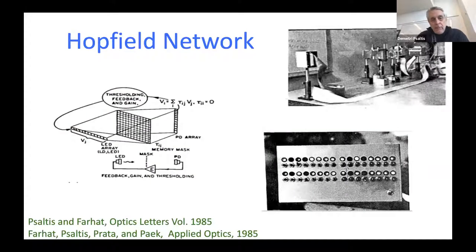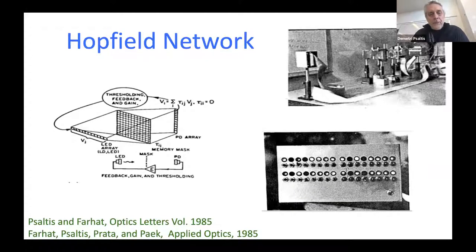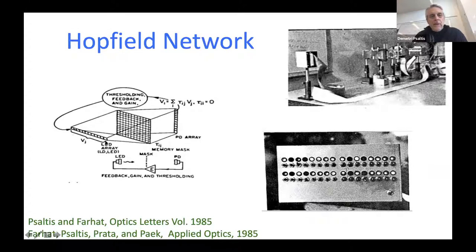In 1985, back at Caltech, they built the first optical network of this type. It was a very simple network built using an array of LEDs, with a total of 32 to 64 neurons.